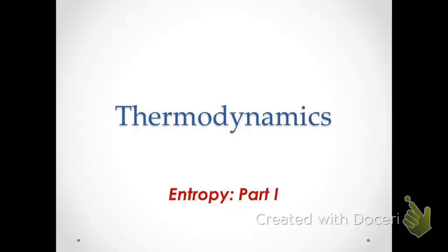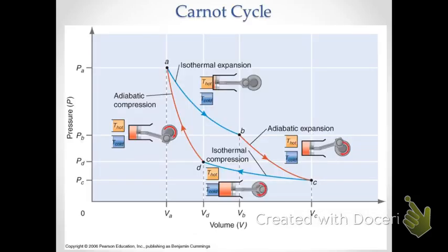In this video, we begin our exploration of entropy and the second law of thermodynamics. We start with the Carnot cycle, which is a cycle for what we might call the ideal engine. It's a cycle that is completely reversible — every step in this four-step process is a reversible step. The work that we get out of a reversible process is the maximum we can expect to achieve.